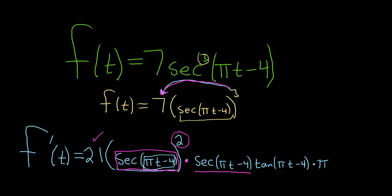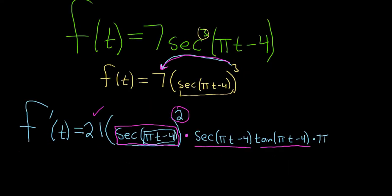So the derivative of secant is secant tangent. So we write it twice. Secant tangent. And then again times the derivative of the inside. And the derivative of pi t minus 4 is pi. That's because the derivative of t is 1, so we just get pi. And the derivative of negative 4 is 0.